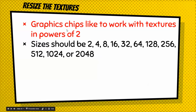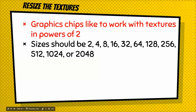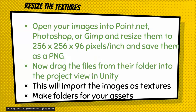Graphics chips like to work with textures in powers of 2 — so 2, 4, 8, 16, 32, and so on — for the size. This makes it work faster, and faster is good. For us, the magic number is 256. That's the size we're going to use. Write this down and then keep going.